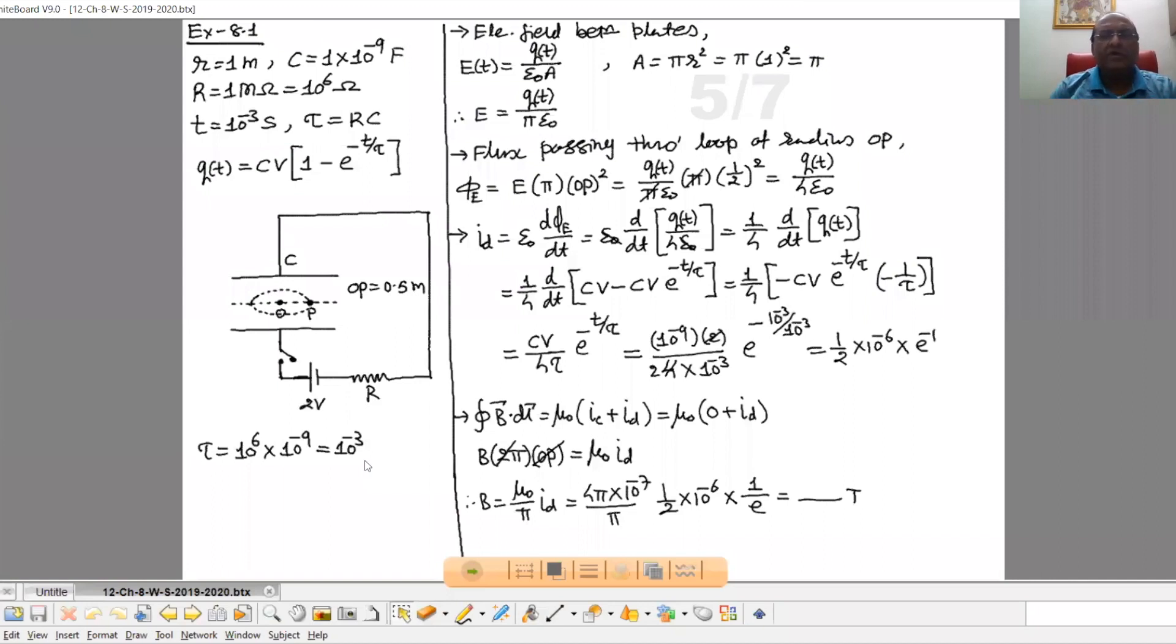Now if you want to calculate the magnetic field at point P, then first of all you have to calculate displacement current. Because when we apply Ampere circuit law to calculate magnetic field here, in that Ampere Maxwell law conduction current will be 0 between two plates of the capacitor but there will be the displacement current. And using that you can calculate magnetic field at P. So let's first calculate displacement current.